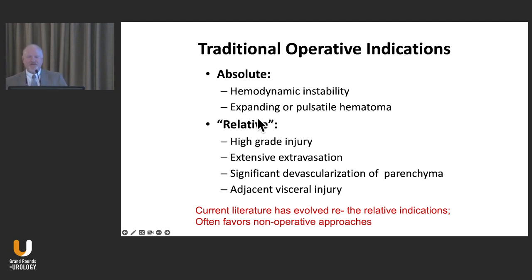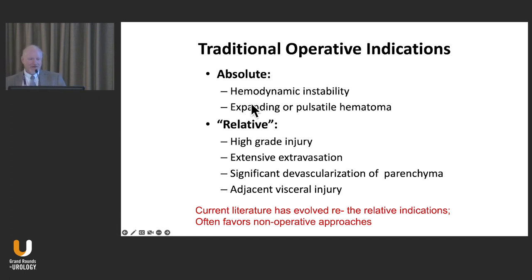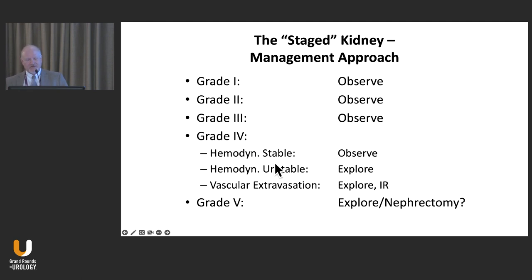Whether a hematoma in the retroperitoneum is pulsatile has a lot more to do with the patient's blood pressure and how thin they are than whether there's actually some arterial effect you're feeling over the retroperitoneum. But expansion — that's important. If you come in and look and it's like this, and then 10 minutes later it's like that, that's important. In terms of relative indications: high-grade injury, extensive urinary extravasation.